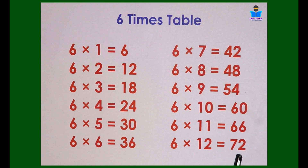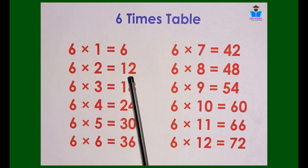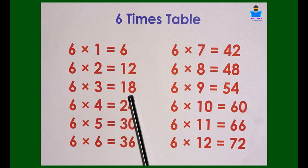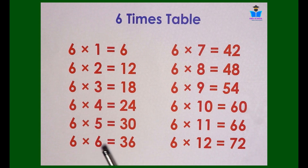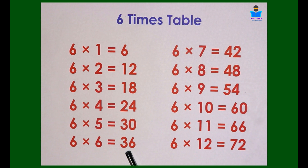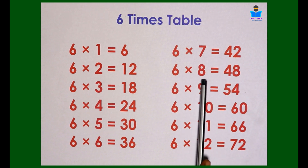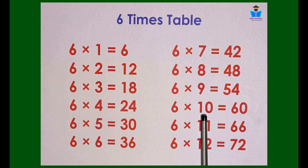6 ones are 6. 6 twos are 12. 6 threes are 18. 6 fours are 24. 6 fives are 30. 6 sixes are 36. 6 sevens are 42. 6 eights are 48. 6 nines are 54. 6 tens are 60.